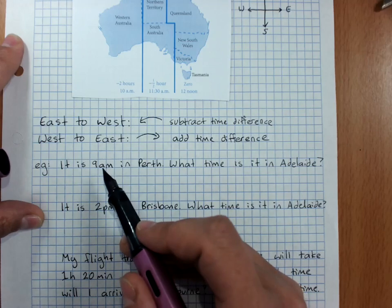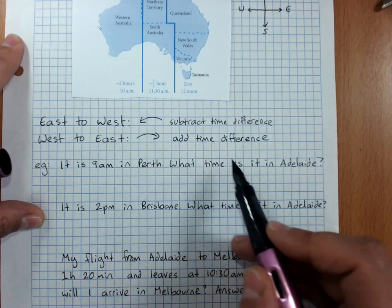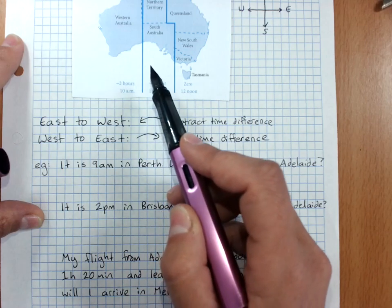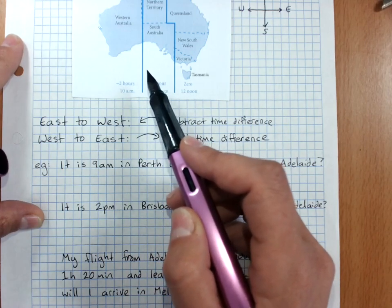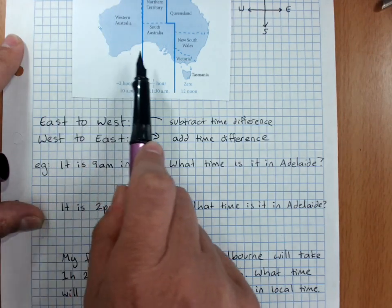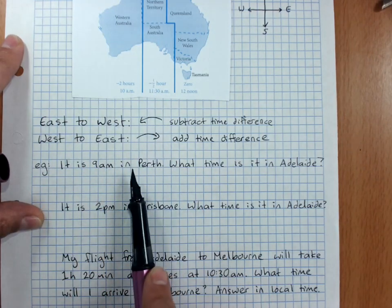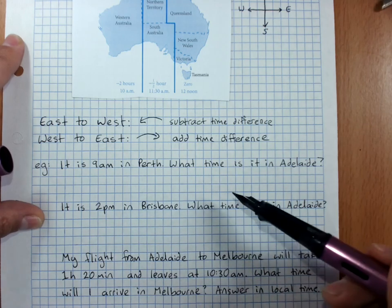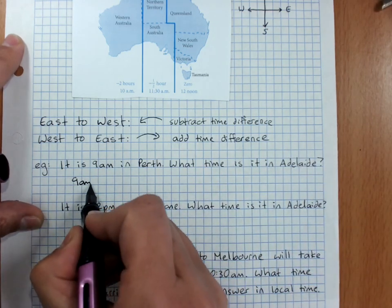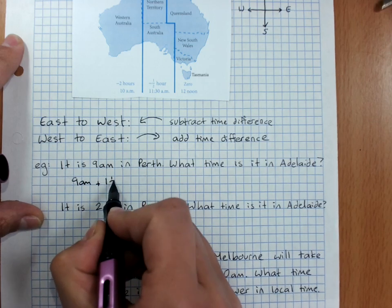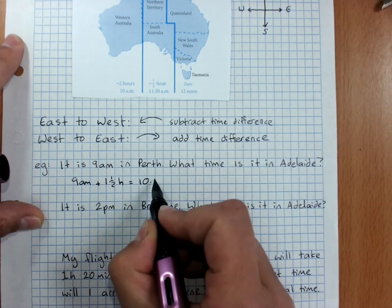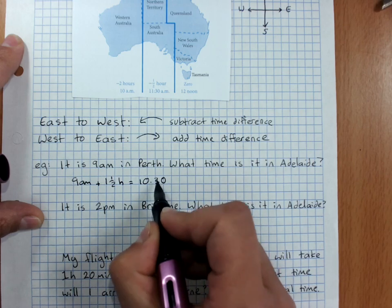For example, it's 9 a.m. in Perth — what time is it in Adelaide? From Perth to Adelaide, that's a one and a half hour difference, and I'm going from West to East, so I add one and a half hours. 9 a.m. plus one and a half hours means it would be 10:30 a.m. in Adelaide.